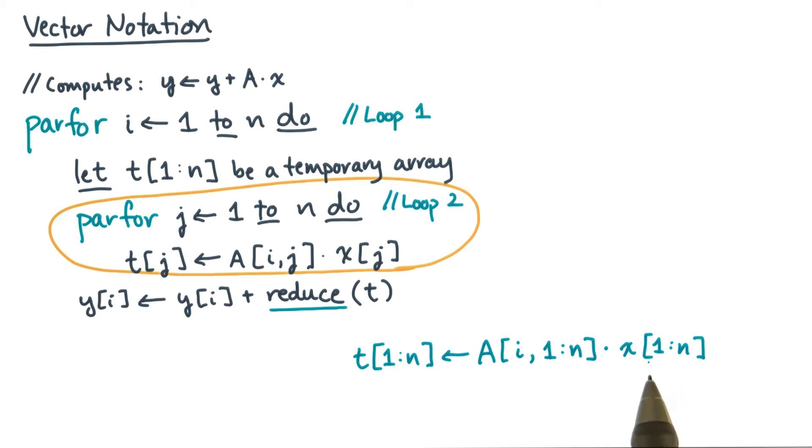The arrays are all of length n, and they're all indexed in the range 1 to n. Now this notation is common in a bunch of modern languages. That includes Python, Matlab, and core Fortran.